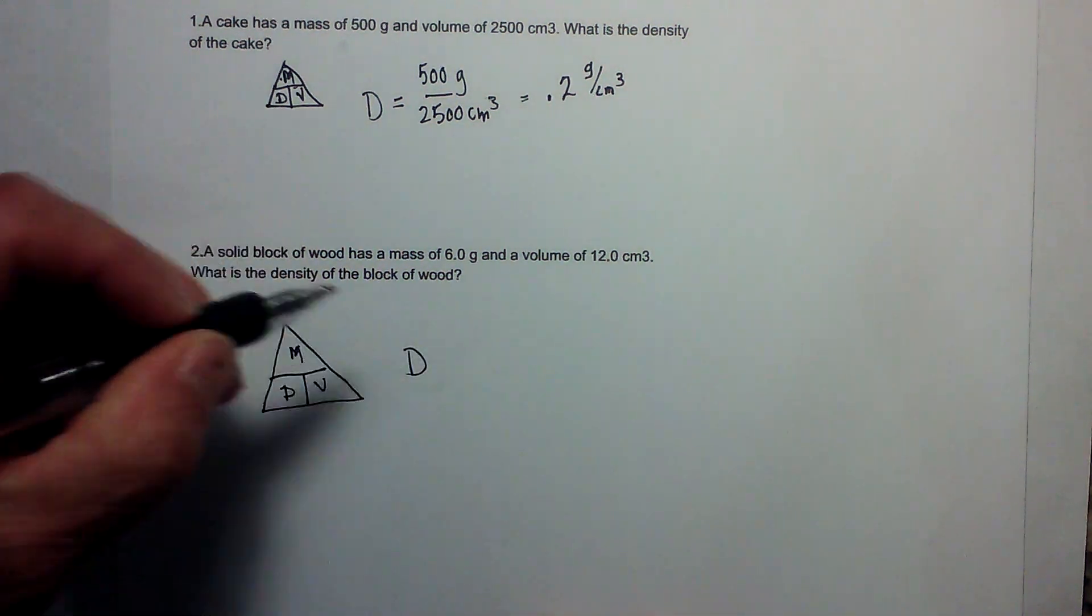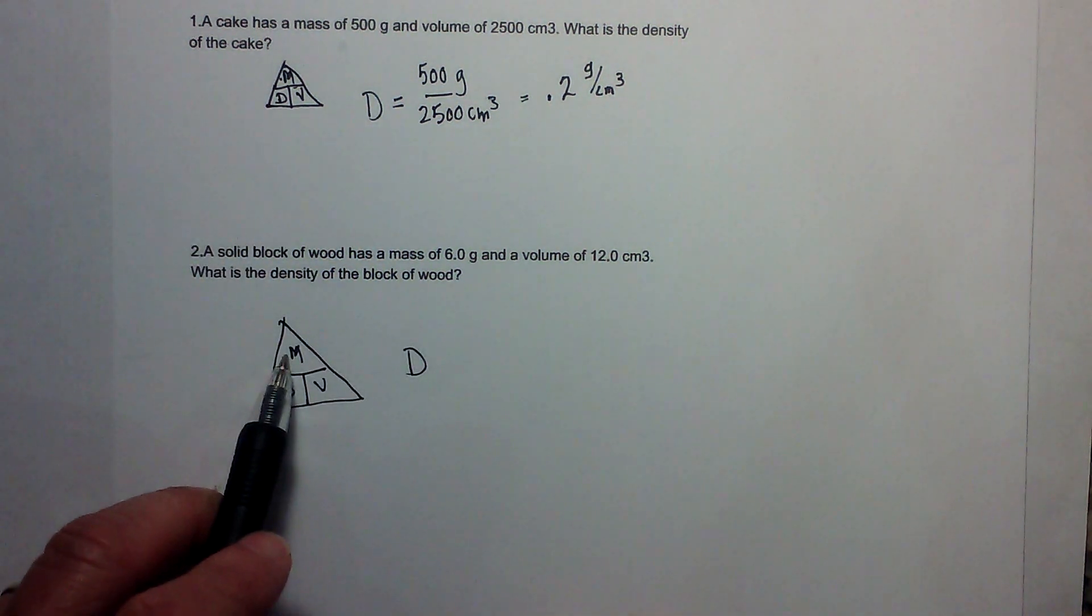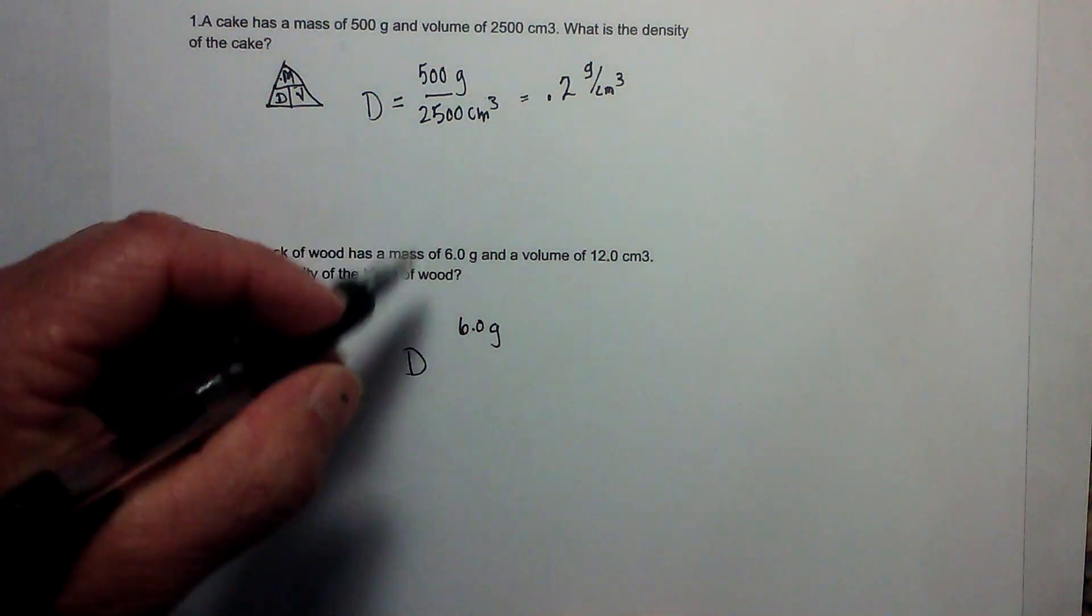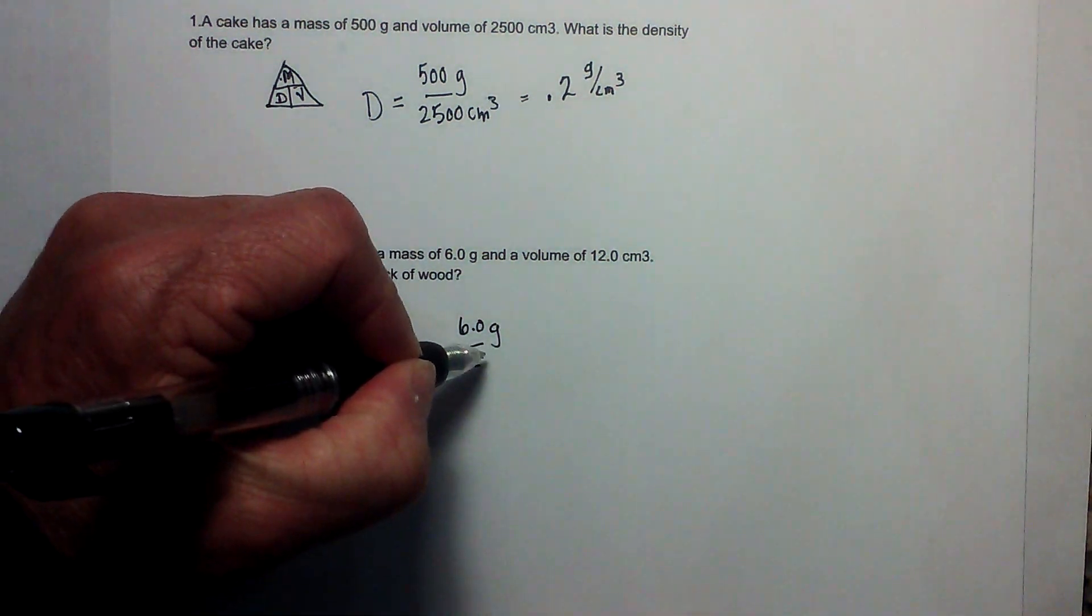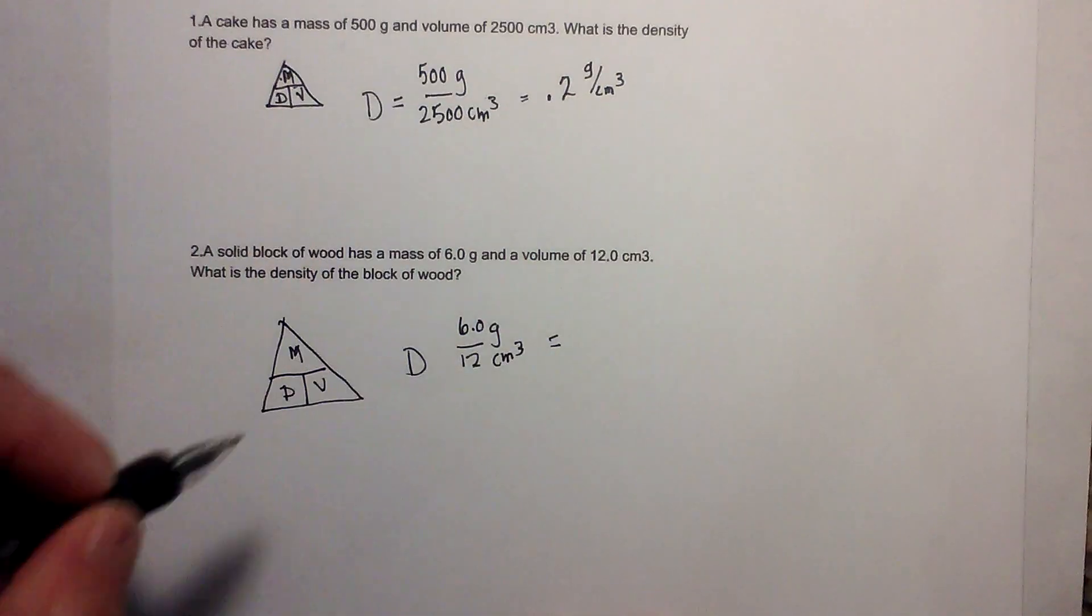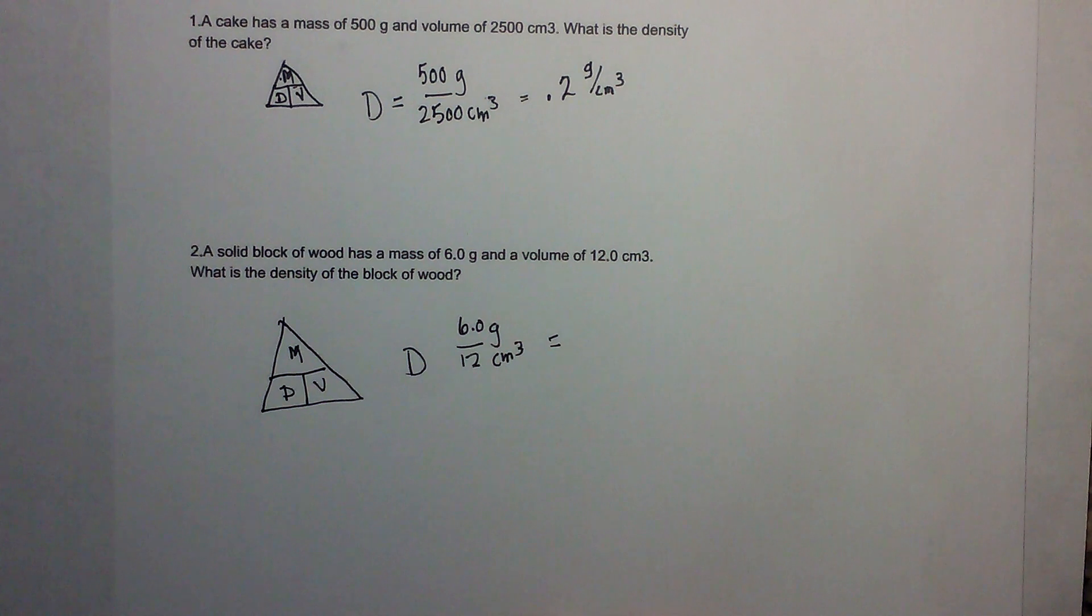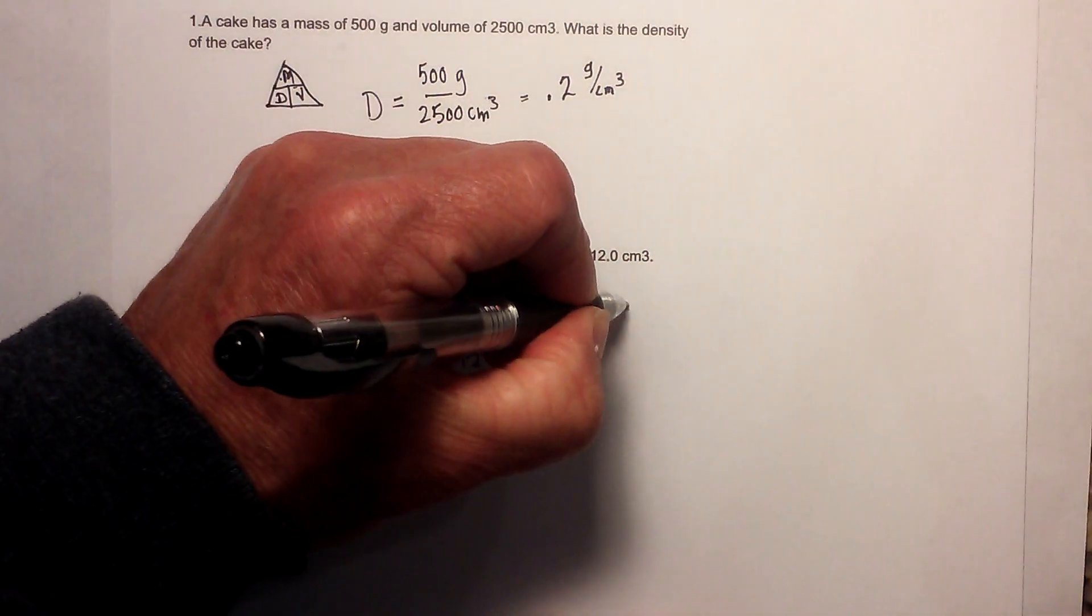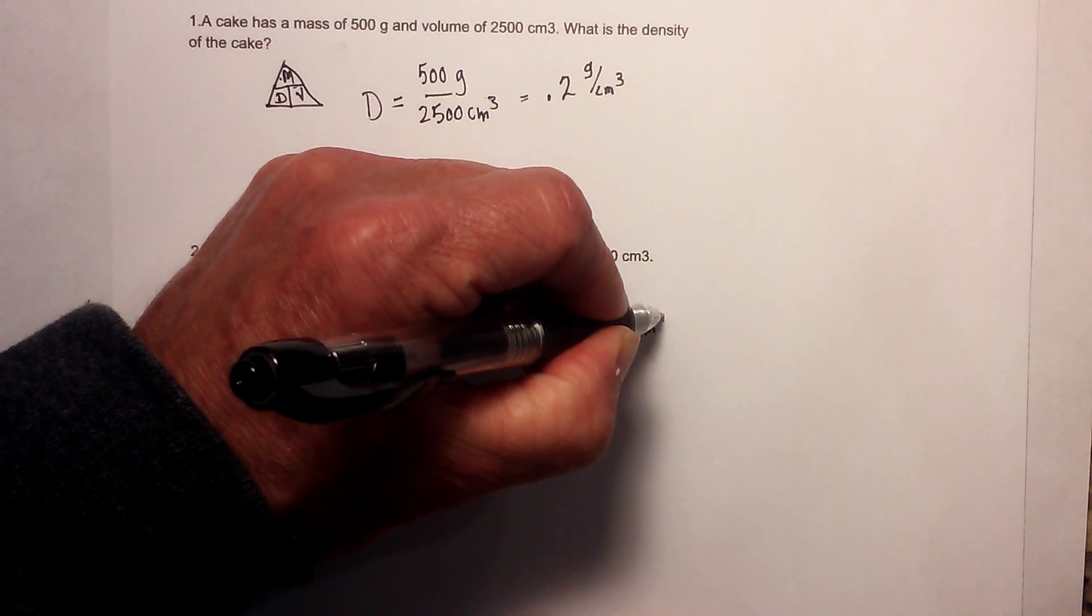Again I'm looking for density. The mass, which goes here, is 6 grams. The volume is 12 centimeters cubed. When you divide 6 by 12 that gives you 0.5, and again you have grams per centimeters cubed.